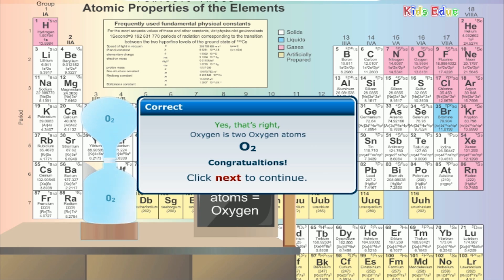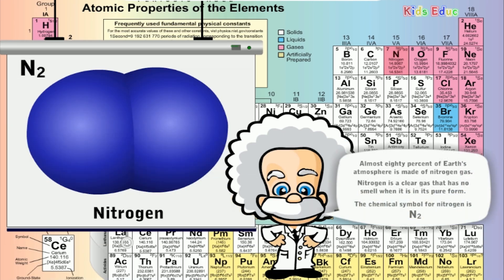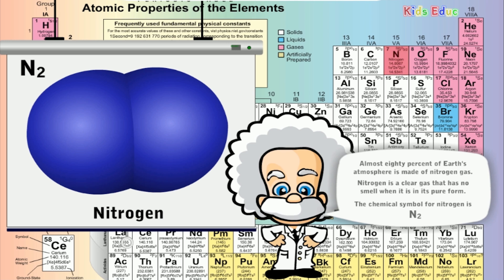Oxygen is a gas — a colorless and odorless compound; you cannot see oxygen. What is nitrogen? Almost 80 percent of Earth's atmosphere is made of nitrogen gas. Nitrogen is a clear gas that has no smell when it is in pure form; you cannot see nitrogen. Daniel Rutherford discovered nitrogen in 1772, but in 1790 it was named by Jay Chaptal, a chemist. The chemical symbol for nitrogen is N2.